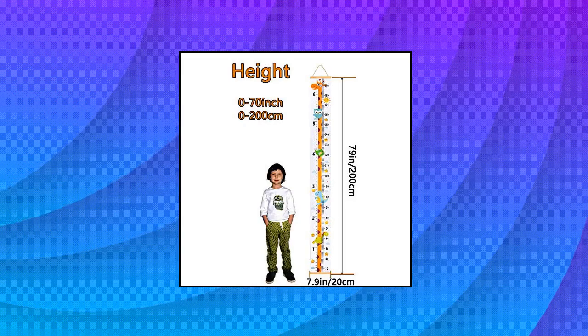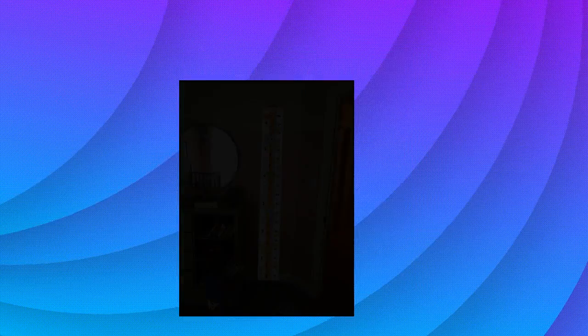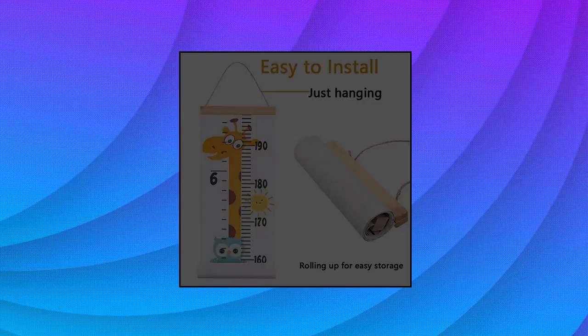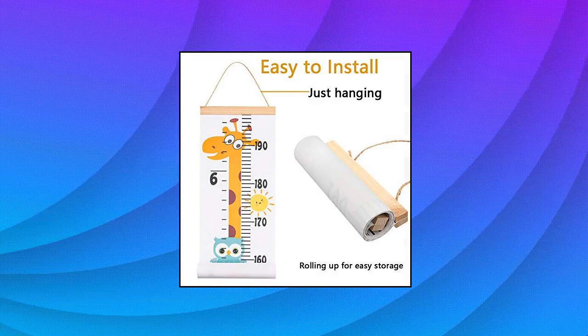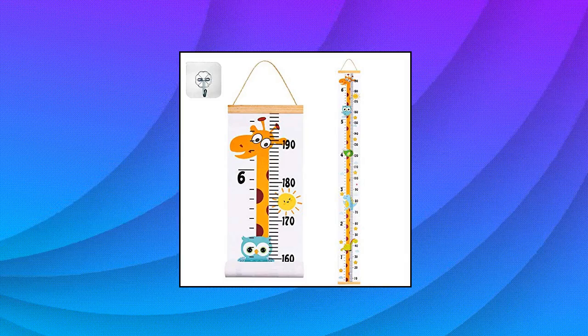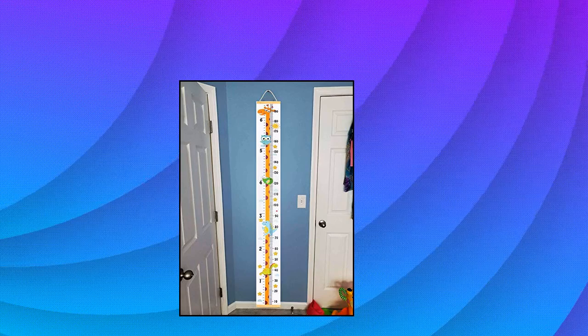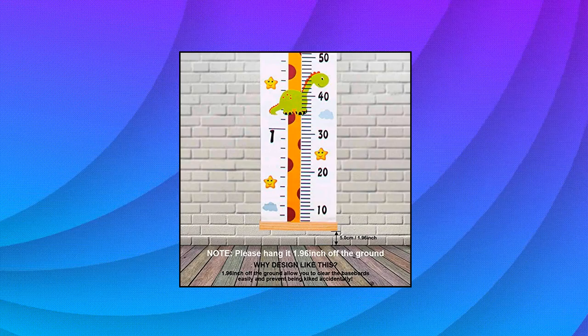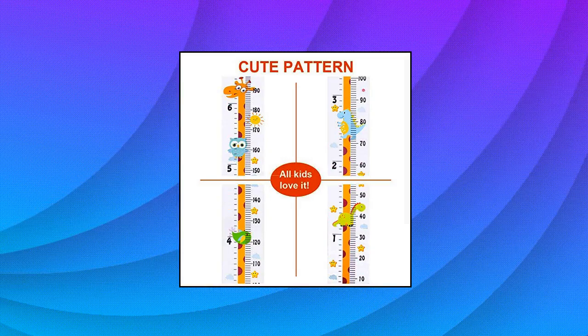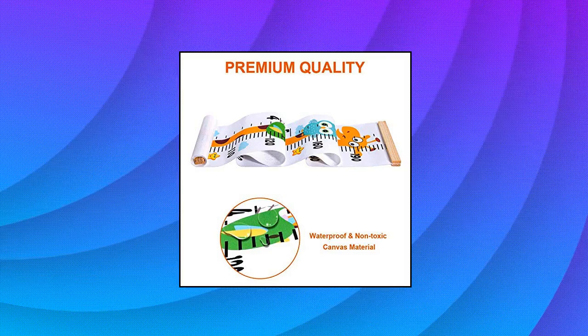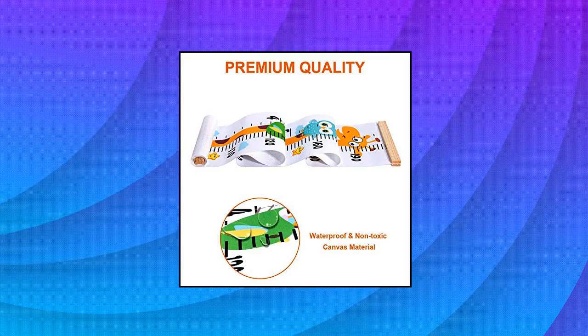Dot JJ Goo Baby Growth Height Chart Hanging Ruler Wall Decor for Kids. 79 by 7.9 inches, 200 cm by 20 cm, measurement in cm and feet. Integrate easily into your room's decor, decorate kids nursery. With hanging rope and polished smooth wood, waterproof and durable. Comes with a hook, easy to install and remove. Great gift idea for birthday.